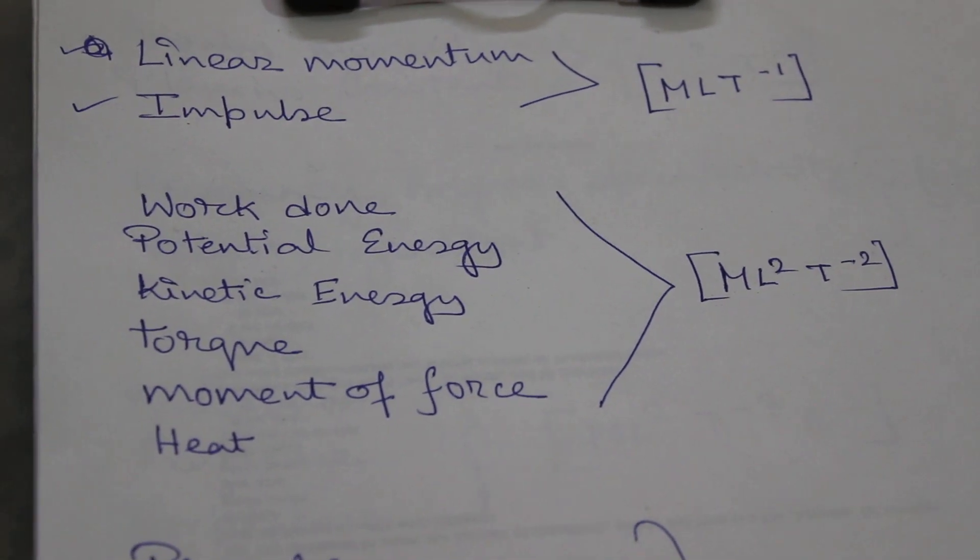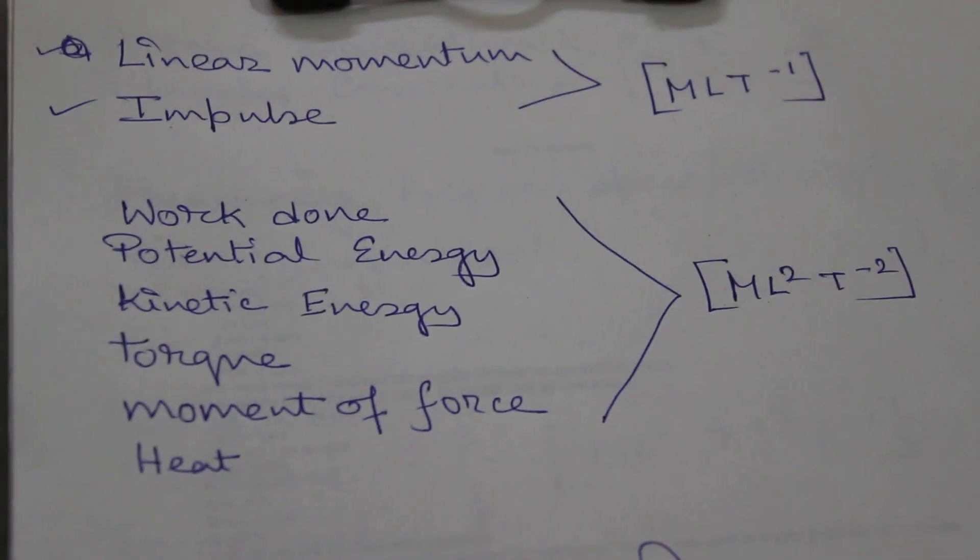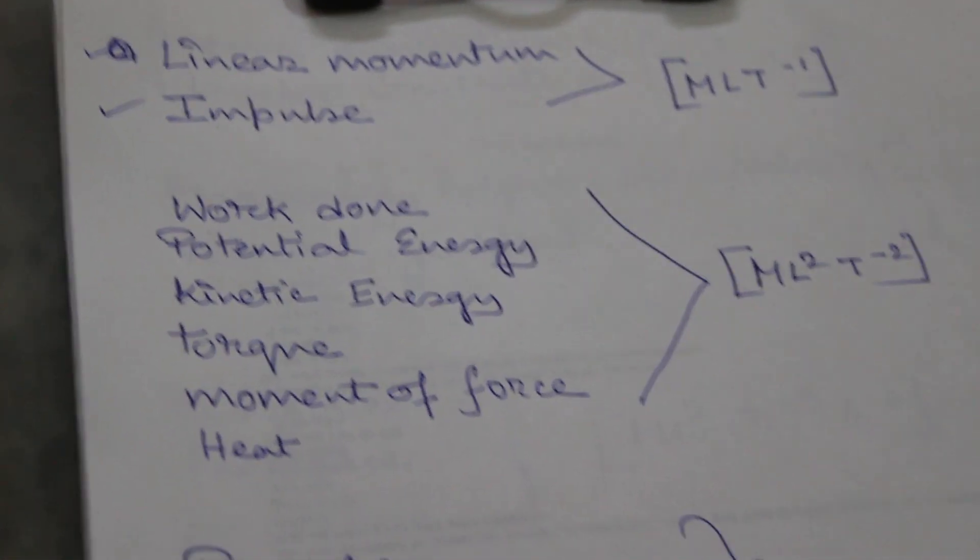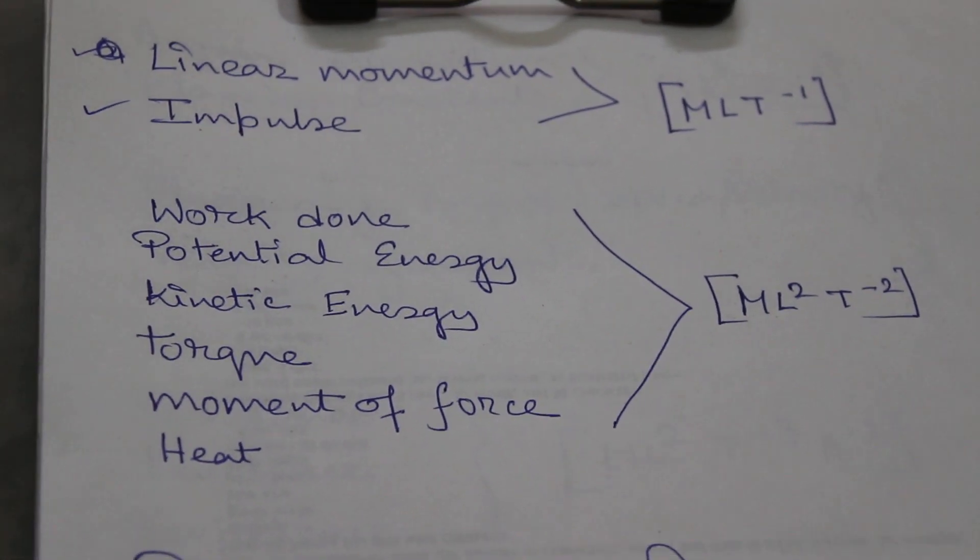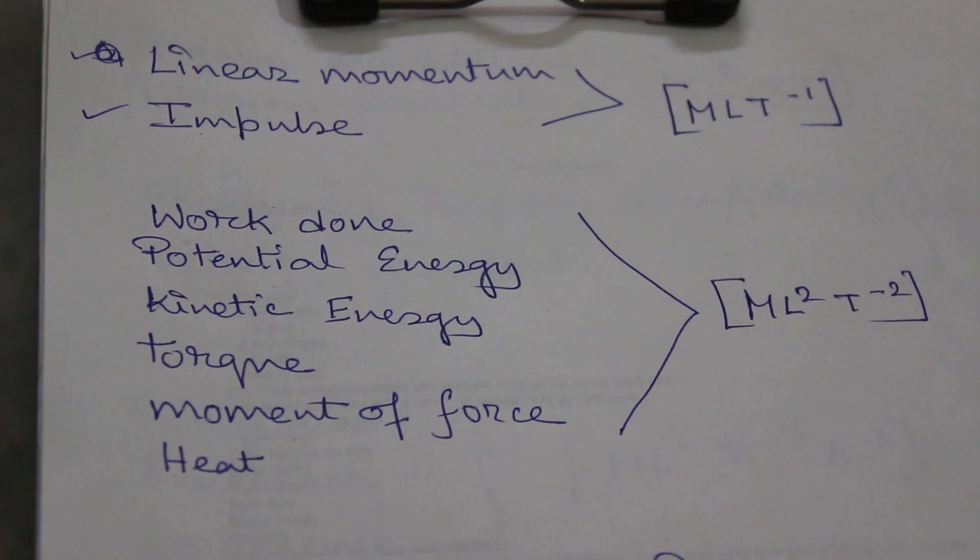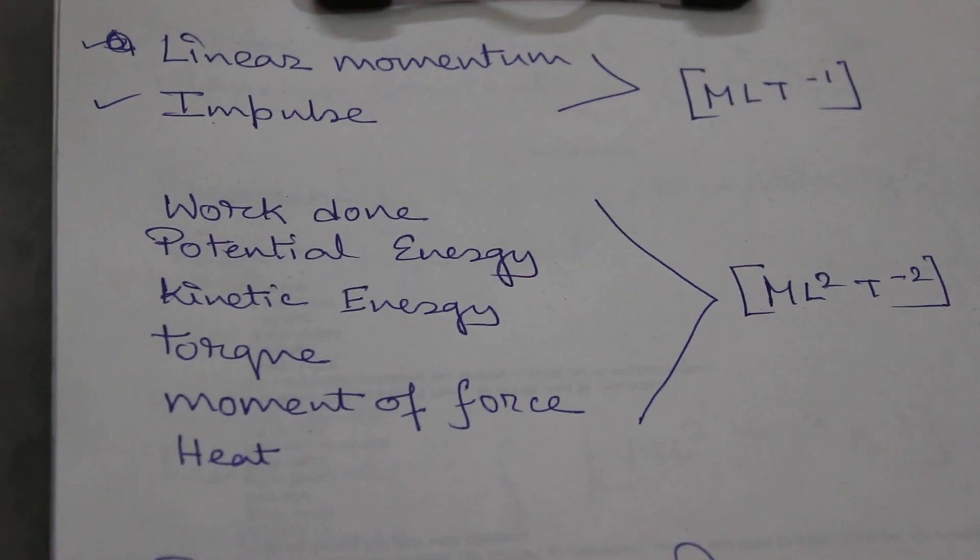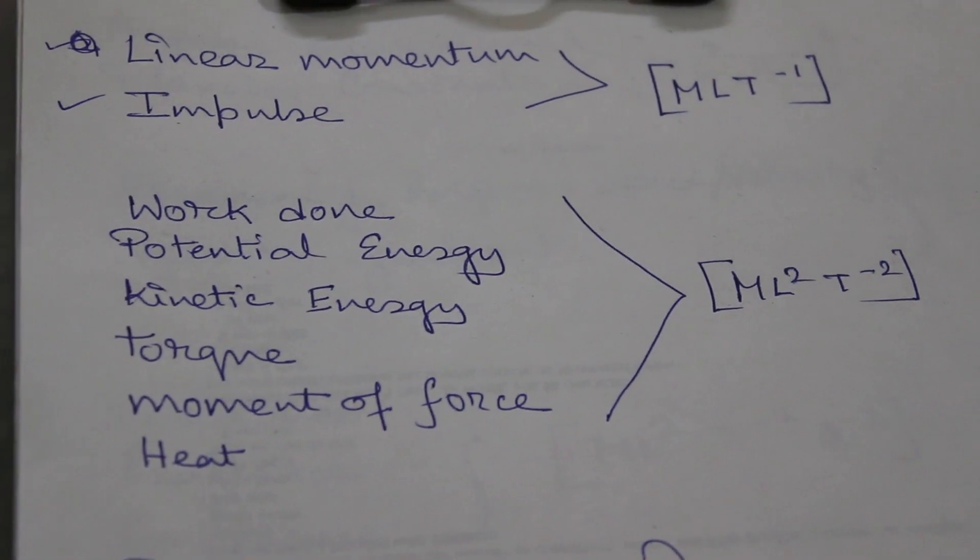First is linear momentum and impulse. They both have the same dimension because linear momentum is mass into velocity, and impulse is also changing momentum, so they have similar dimensions.